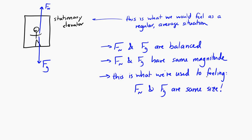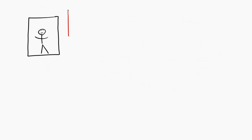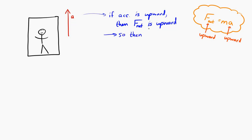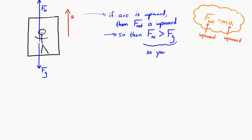When that normal force changes, that's when we start to feel heavier or lighter. If the elevator accelerates upward, then you in the elevator are also accelerating upward. Because of Newton's second law — F net equals ma — if the acceleration is upward, there must be a net force upward on the person. That means the normal force has to be greater than the gravitational force. A greater normal force is what makes you feel heavier than you're used to.